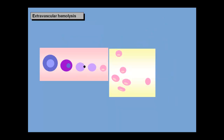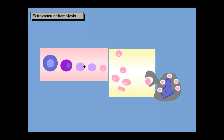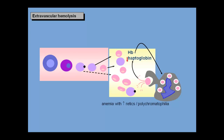In most hemolytic anemias, the red cell itself is abnormal and is gobbled up by macrophages in the reticuloendothelial system well before the normal 120 days. That leads to the familiar pattern: anemia with increased reticulocytes and sometimes polychromatophilia. What distinguishes hemolysis from bleeding, where the red cells cleanly exit the body, is that in hemolysis, some red cell contents spill into the plasma. The small amount of hemoglobin that spills is immediately bound to the plasma protein haptoglobin, which brings it to macrophages to recycle the iron and process the heme.